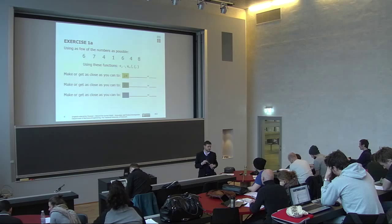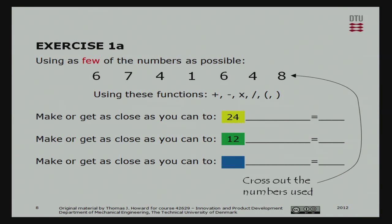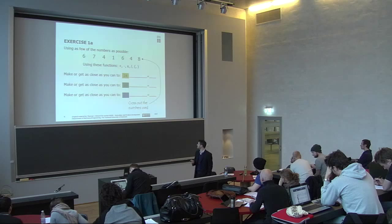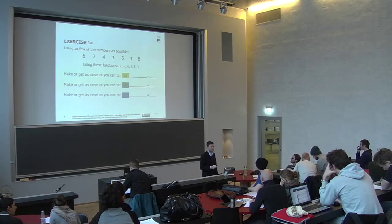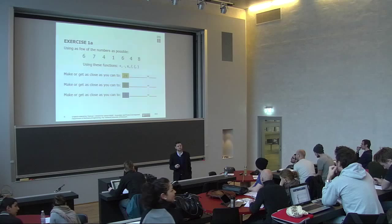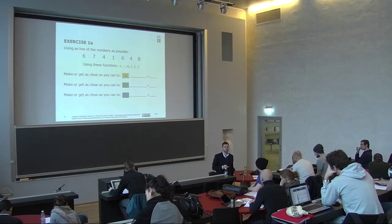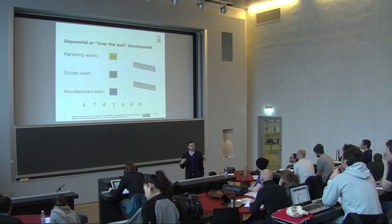Did anybody get the number 4? Was anyone 1 away from it? What number did you get? 3. And did you have any spare numbers left over? The purpose of that first exercise is to show the kind of inefficiencies of sequential product development.